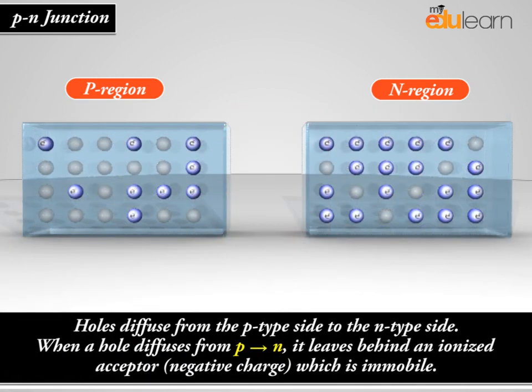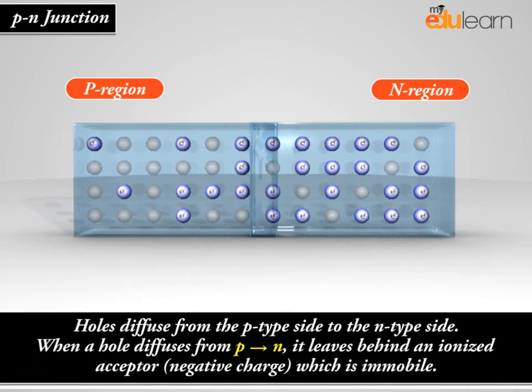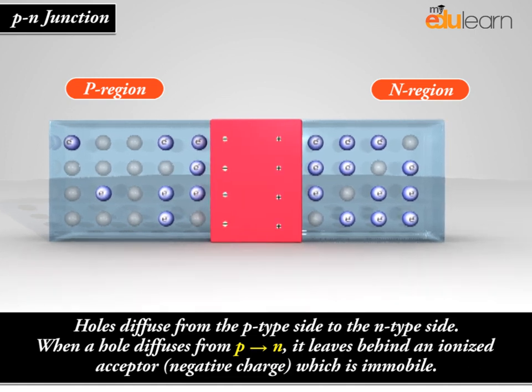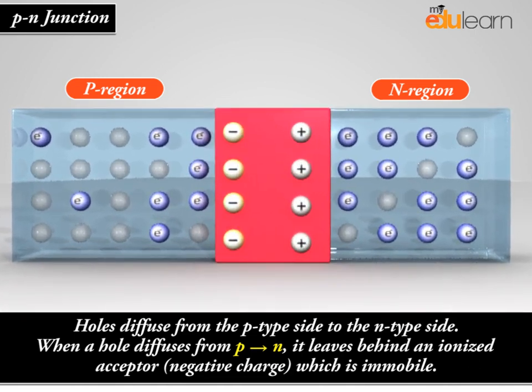Similarly, holes diffuse from the P-type side to the N-type side. When a hole diffuses from P to N, it leaves behind an ionized acceptor, negative charge, which is immobile.